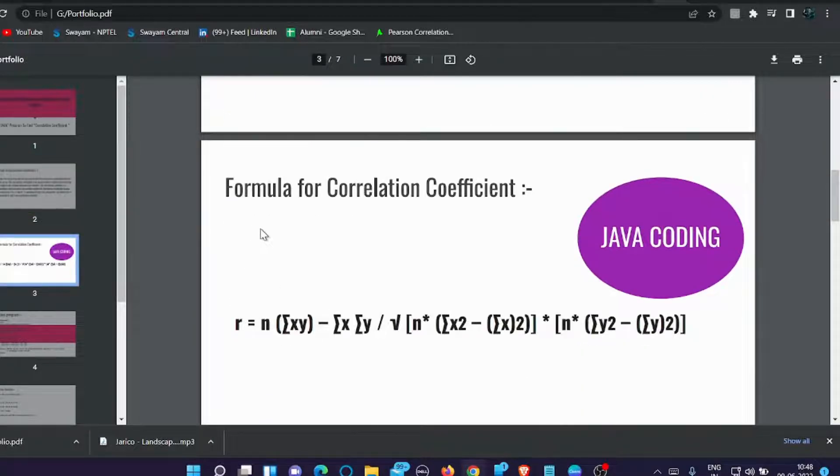Here we have the formula for correlation coefficient: R equal to n into summation of xy minus summation of x summation of y divided by square root of n into summation of x square minus summation of x whole square into n into summation of y square minus summation of y whole square.